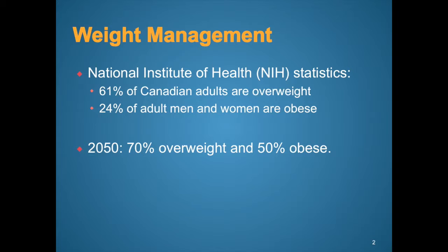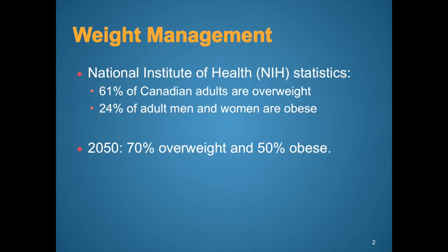Why is weight management an issue? By our best statistical guess, 61% of Canadian adults are overweight currently, and 24% of the population in Canada are obese. There are a variety of well-documented health concerns with that, and the trend is increasing. By 2050, we expect 70% of the population will be overweight and 50% will be obese — half the people in Canada suffering from associated cardiovascular and diabetic complications. It's a multifaceted problem requiring understanding of many facets.